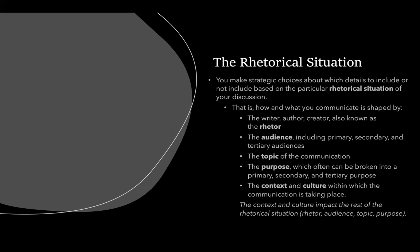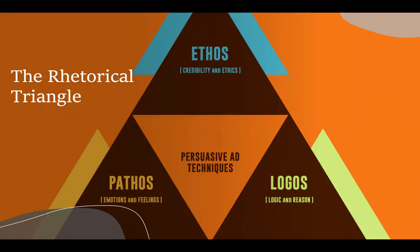You also need to consider the topic of the communication, the purpose — which can often be broken into primary, secondary, and tertiary purposes — and the context and culture within which the communication is taking place. For example, are you sharing this in the workplace or on social media? When talking about rhetorical situations, we also look at the rhetorical triangle, which has three elements: ethos, which deals with credibility and ethics; pathos, which deals with emotions and feelings; and logos, which deals with logic and reason.